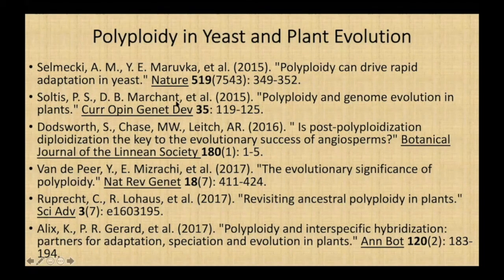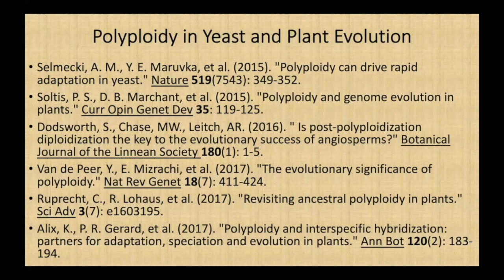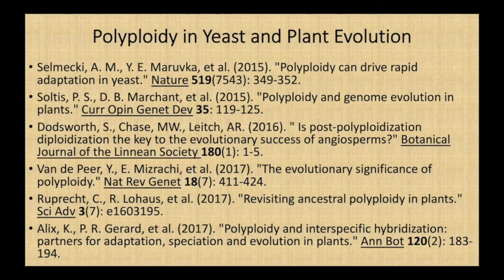Darwin wrote in 1859: if it could be demonstrated that any complex organ existed which could not possibly have been formed by numerous successive slight modifications, my theory would absolutely break down. But I can find no such case. That's from chapter six of the Origin of Species. But based on what we've seen in cancer, and what these papers tell us about plant evolution and yeast adaptations, is there really any question that what we have learned about eukaryotes' capacity for rapid genome reorganization has to be front and center in thinking about how major evolutionary change occurs? Thank you.